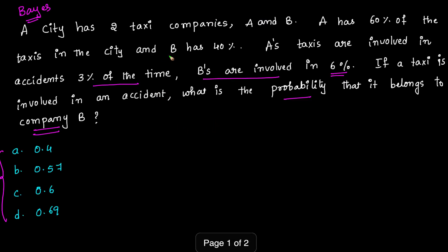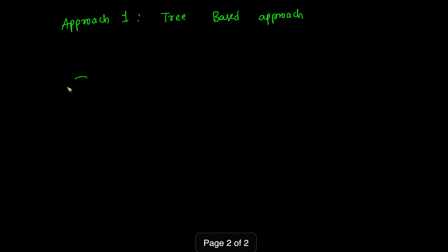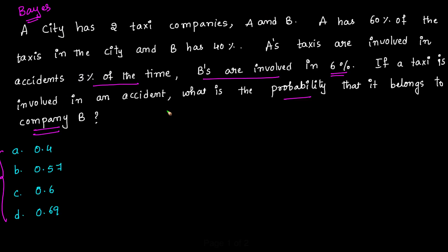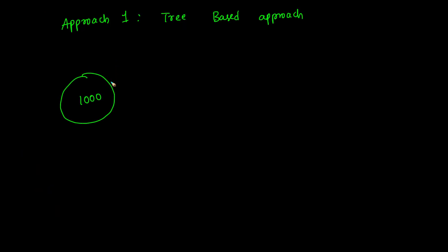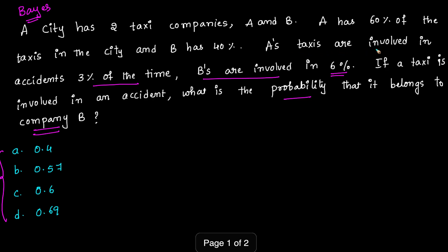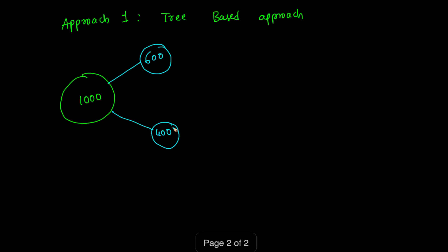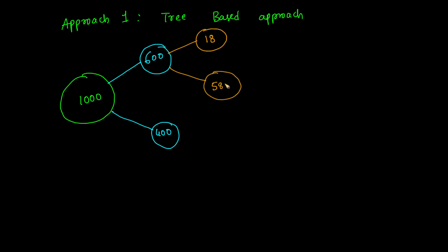In the tree-based approach, let's say there are 1000 taxis in the city. Since company A has 60% of the taxis, that means 600 taxis belong to company A and the remaining 400 belong to company B. A's taxis are involved in an accident 3% of the time, so 3% of 600 is 18 cars involved in an accident, and the remaining 582 cars are not involved.